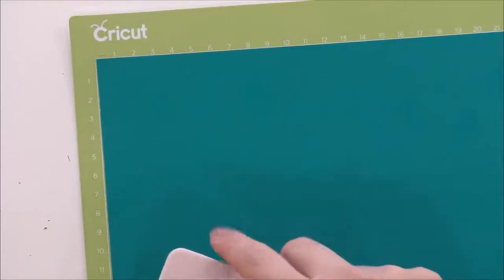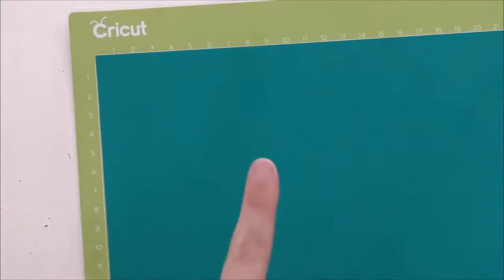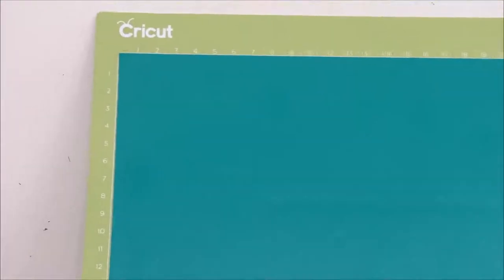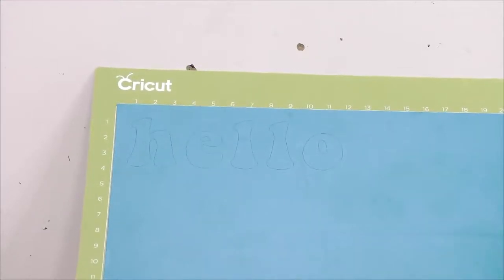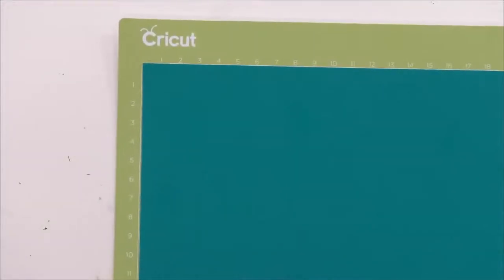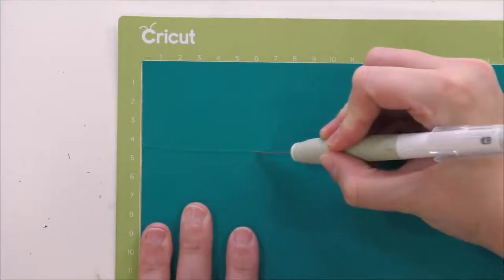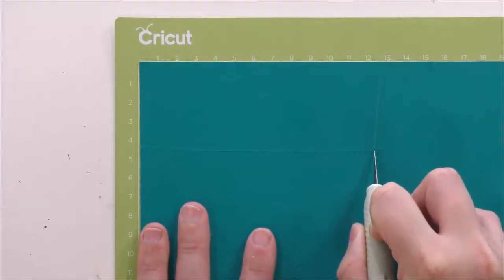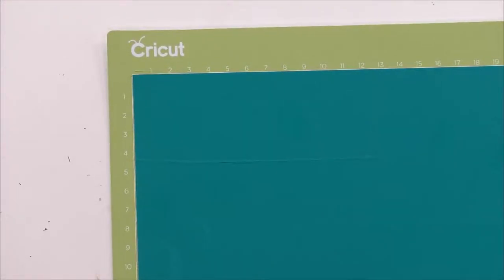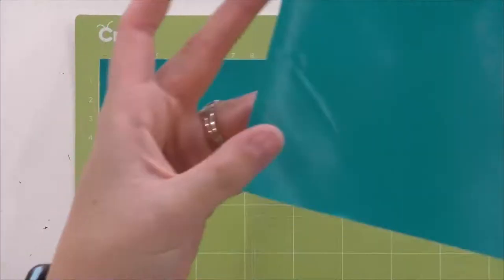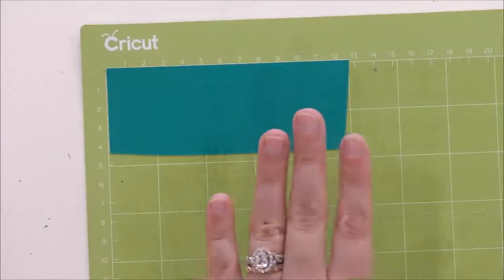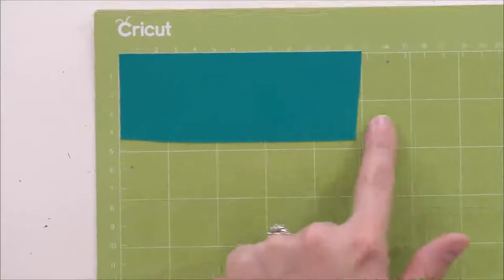The next mistake that you guys make is not trimming the excess vinyl from your design before you weed it. So what I'm going to do is I'm going to go in here with a true control knife after it's been cut and cut along the edge of this design. That way I can peel up the excess just like so and have all of this extra and not have weeded any of that because that is good vinyl. So now we only have this to work with.